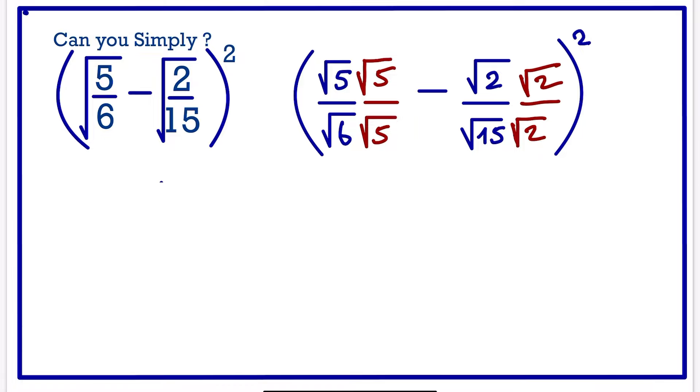Next, we want to multiply to simplify. Root 5 times root 5 is 5. This will give us 5 over root 6 times root 5 is root 30.